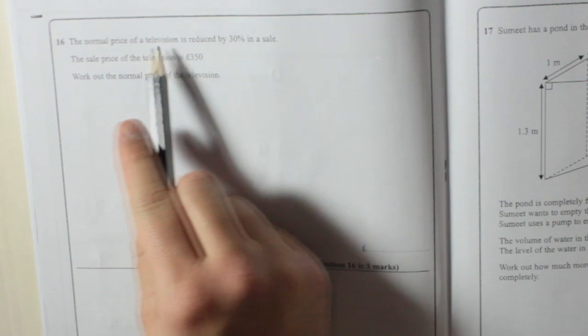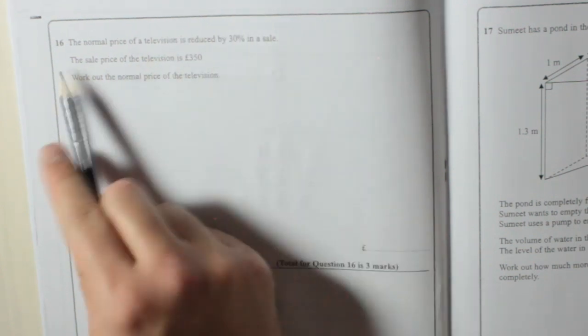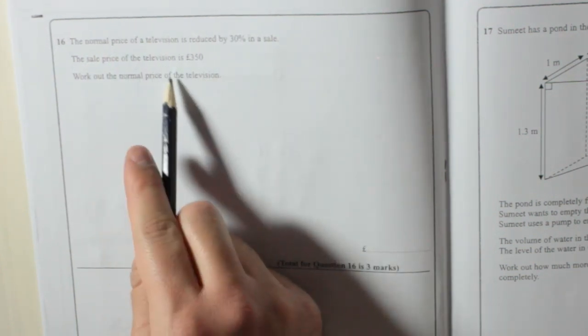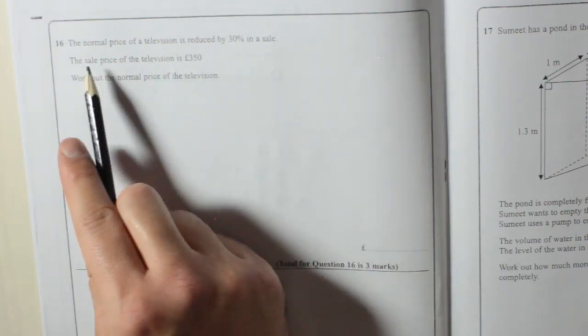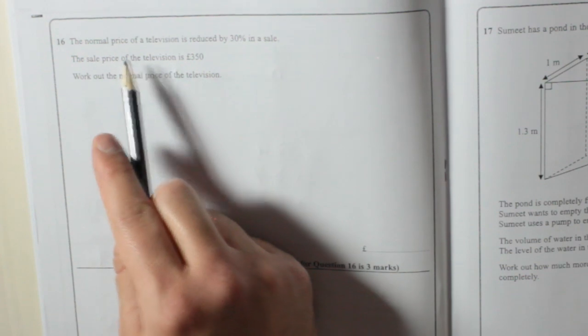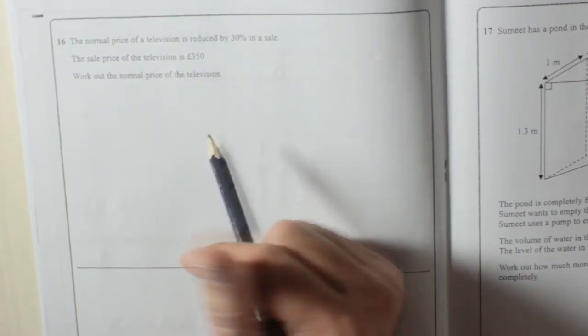Now, the normal price of a television - we don't know what the normal price is, that's what it wants. The normal price is reduced by 30% and the sale price that we get after that reduction is £350.